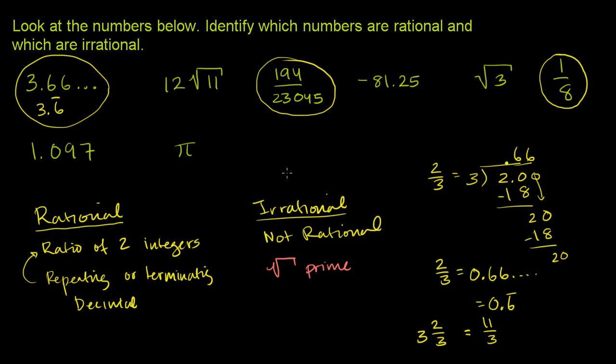You can try it on a calculator if you like, taking the square root of a prime number. But you will see that you get a non-terminating, non-repeating decimal. And so this right here is irrational. I'll do the irrational ones in orange.